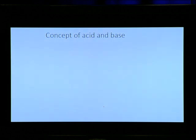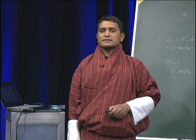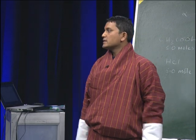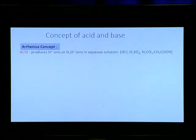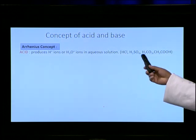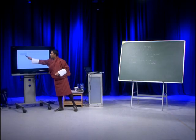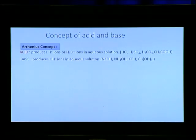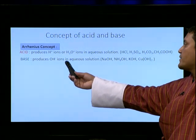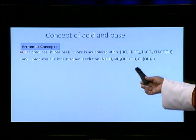Let's look at the concepts of acid and base given by different persons. According to the Arrhenius concept, acids are those substances which produce H⁺ ions or hydronium ions in aqueous solution — for example, hydrochloric acid, sulfuric acid, carbonic acid, and acetic acid are all Arrhenius acids. According to the Arrhenius concept, bases are those substances which produce OH⁻ ions in aqueous solution — for example, sodium hydroxide, ammonium hydroxide, potassium hydroxide, and copper hydroxide are Arrhenius bases.